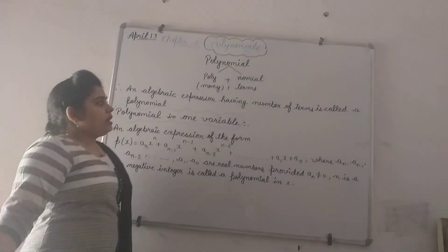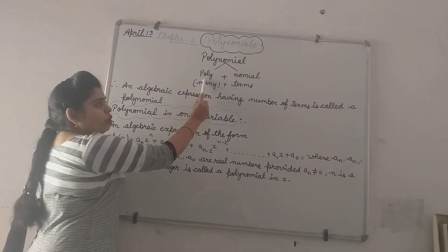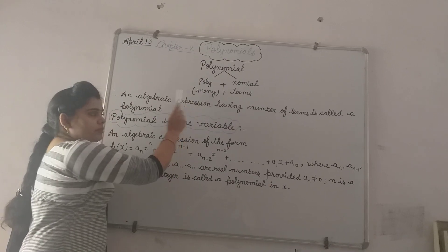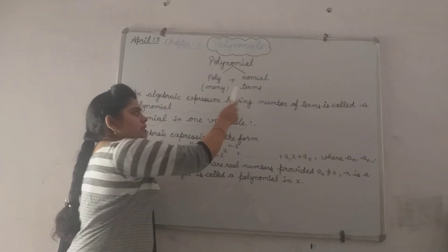Polynomial. Polynomial is a combination of two words, poly plus nominal, where poly means many, nominal means terms.